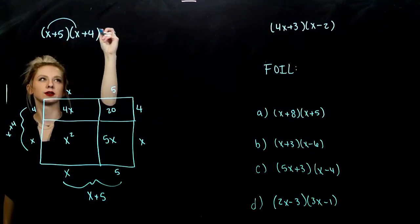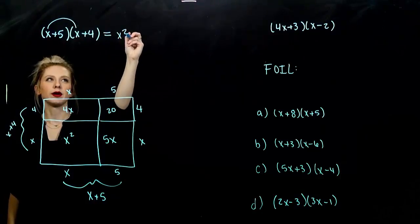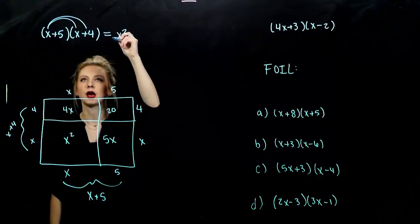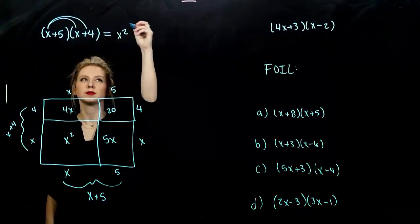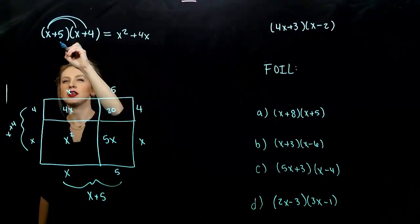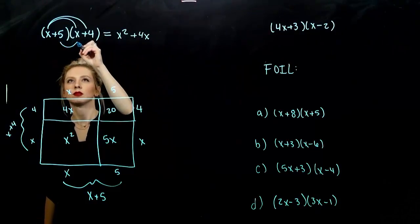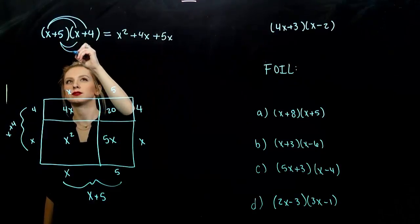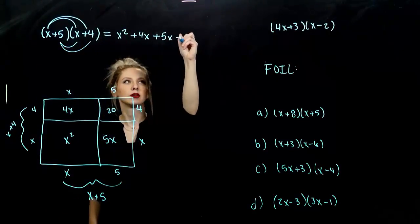First times the first, I'm going to have x squared. First times the last, what's going to happen? 4 times x, I'll have plus 4x. Now I'm looking at the inside. 5 times x will give me 5x. And last, 5 times 4 will give me 20.